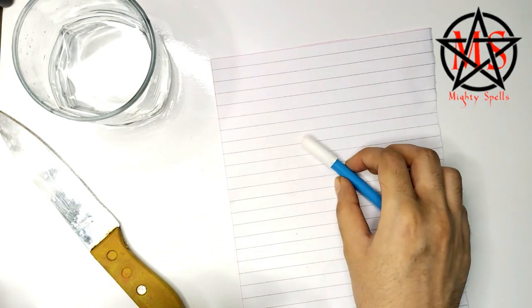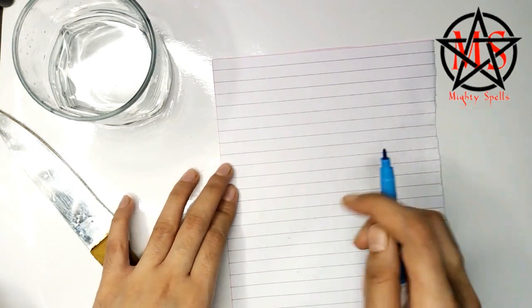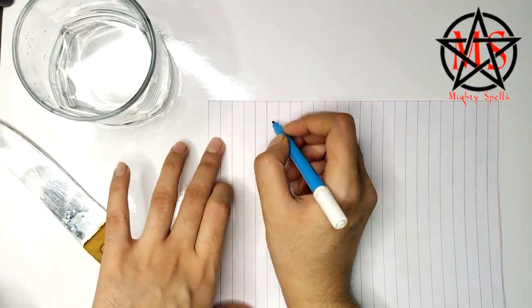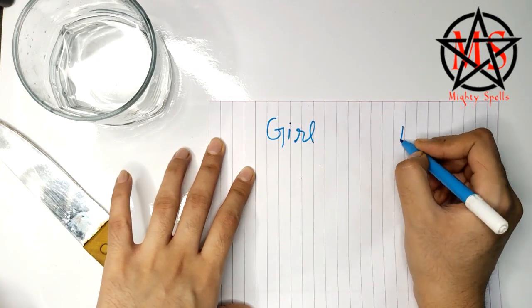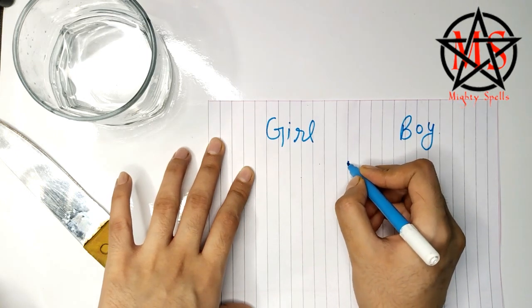Let's start with this spell. Firstly you will need a pen and a paper. You have to do it in landscape. You have to write the name of the girl on the left and the name of the boy on the right, and in the middle you have to make a figure.